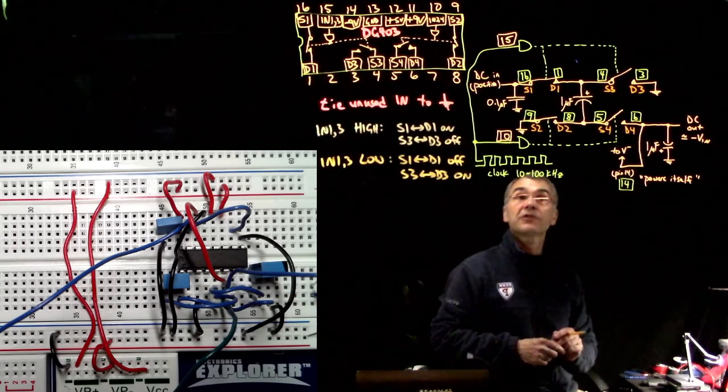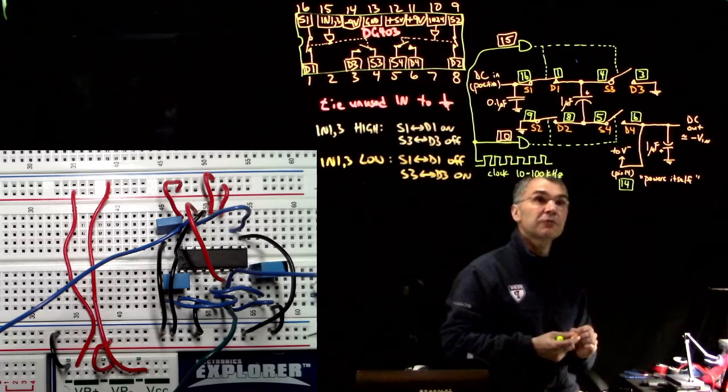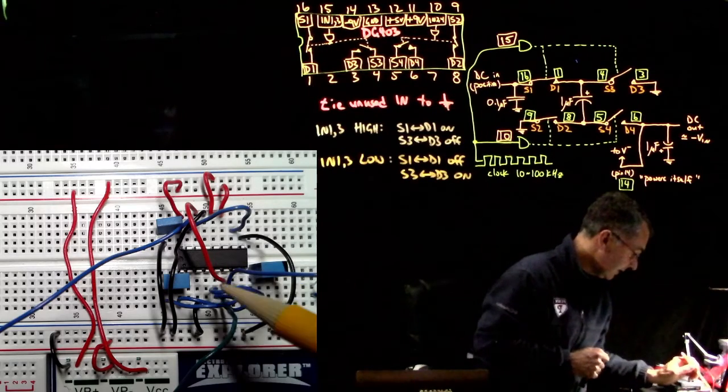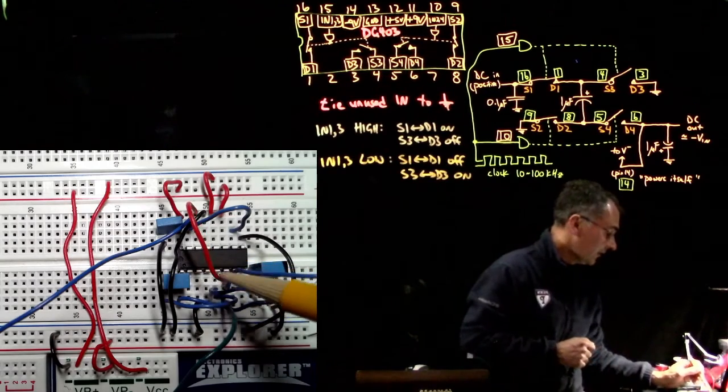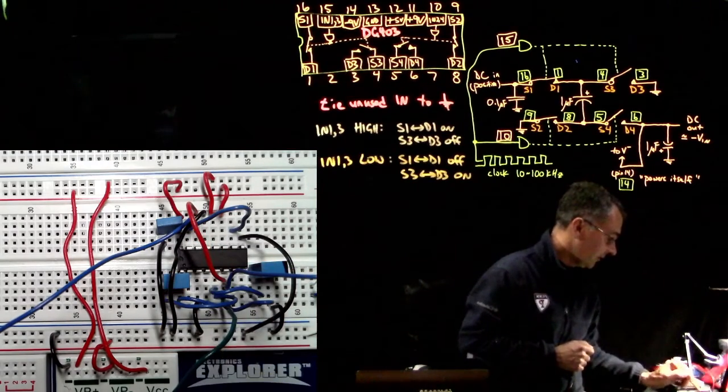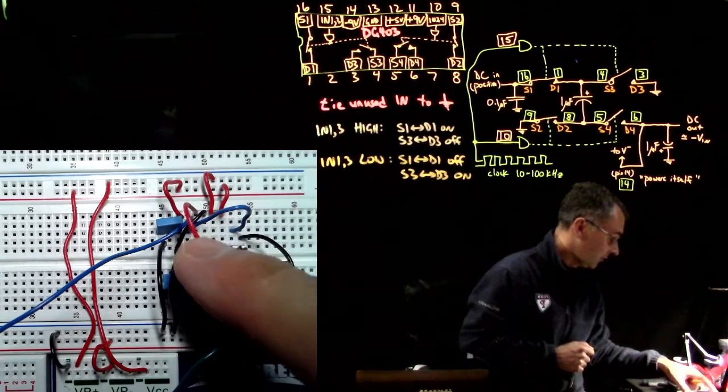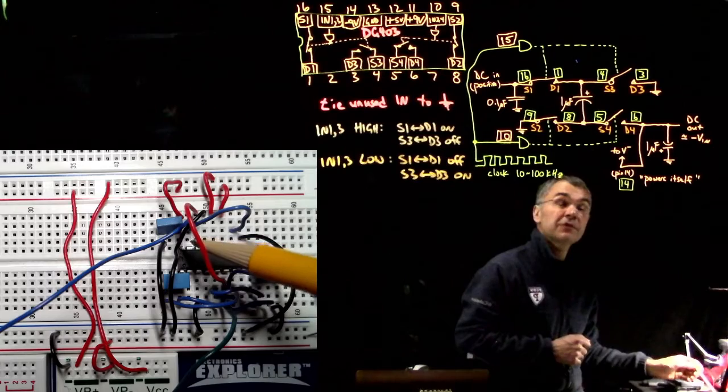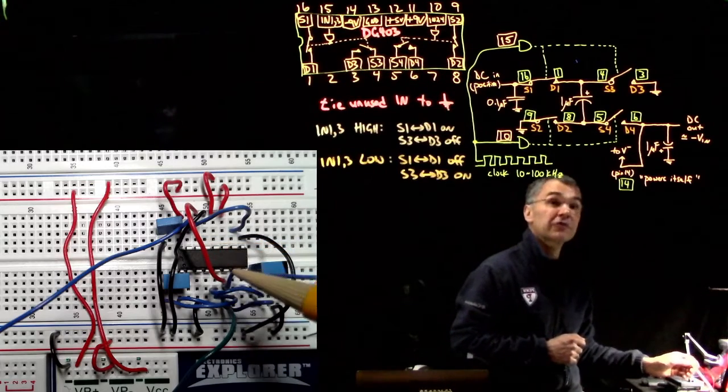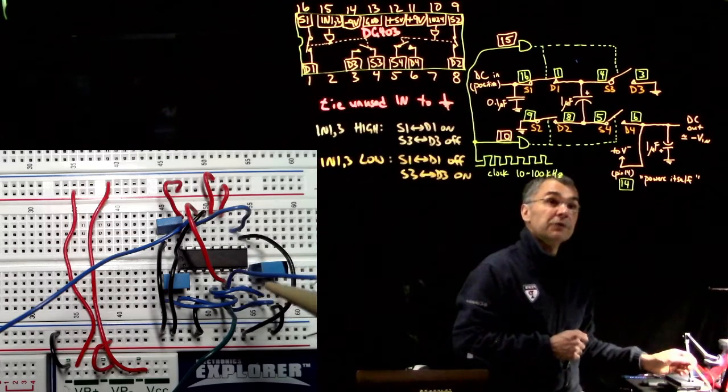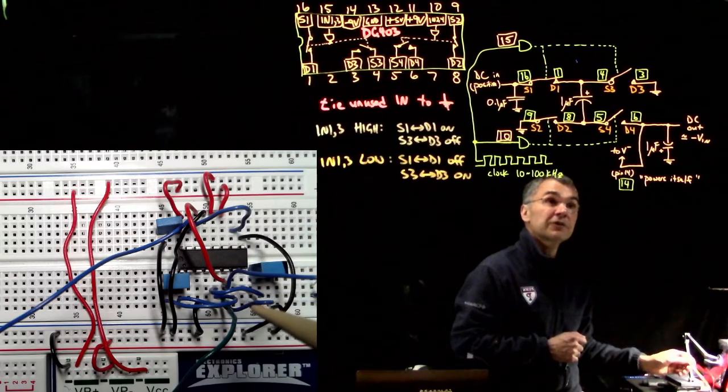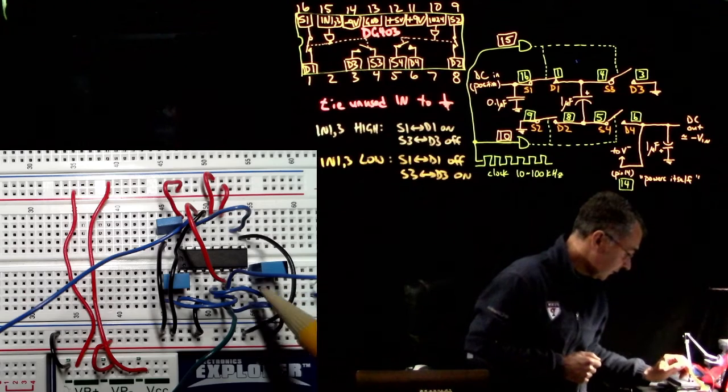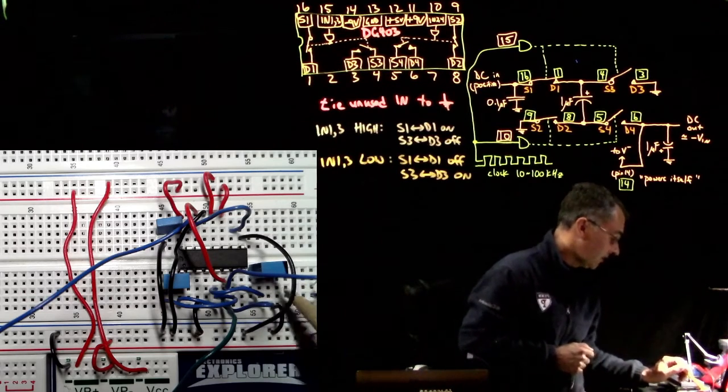And then pin 6 goes to pin 14 because it's providing its own negative voltage. So you see this red wire used to go down here to minus 9, but now from pin 14, instead it goes back to pin 6. So it's providing its own negative power. This red wire goes from pin 6, which is the circuit's output, back to pin 14, which is the circuit's own negative power supply input. And then there is another capacitor from pin 6 to ground.